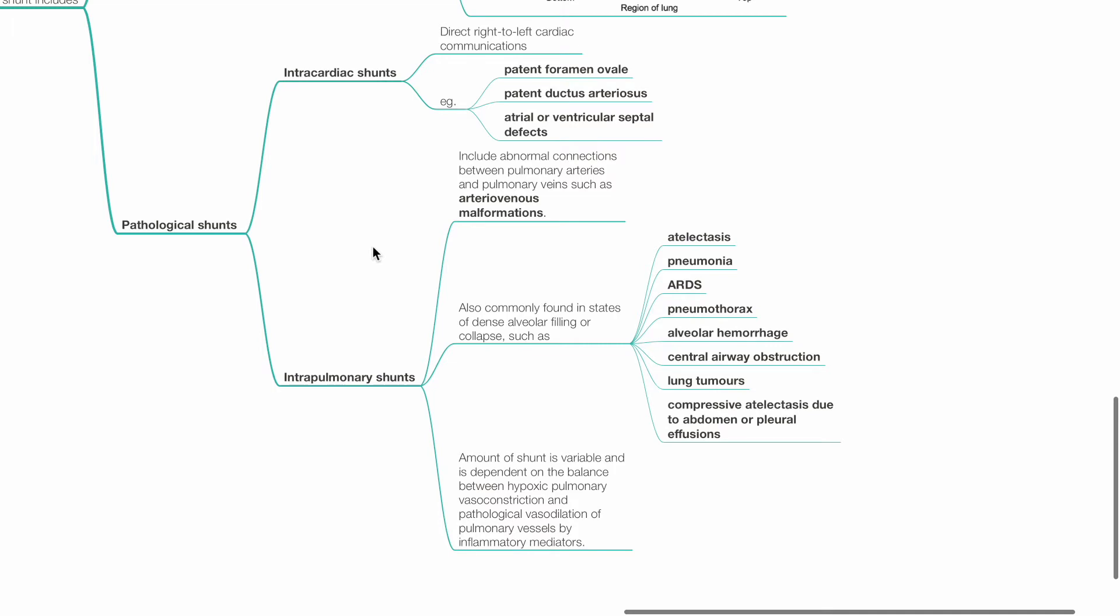Intrapulmonary shunts are also commonly found in states of dense alveolar filling or collapse, such as atelectasis, pneumonia, ARDS, pneumothorax, alveolar hemorrhage, central airway obstruction, lung tumors, and compressive atelectasis due to abdominal or pleural effusions.